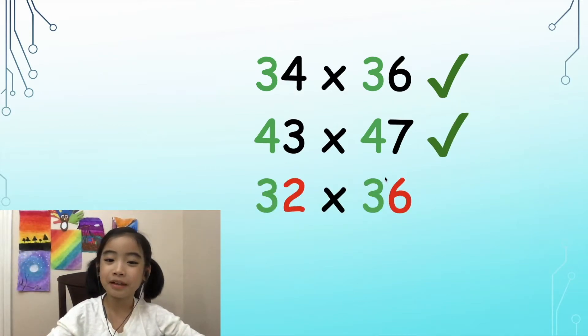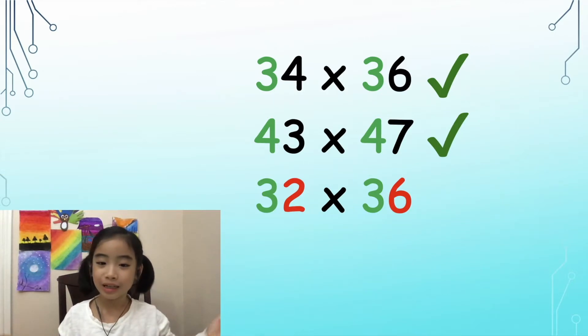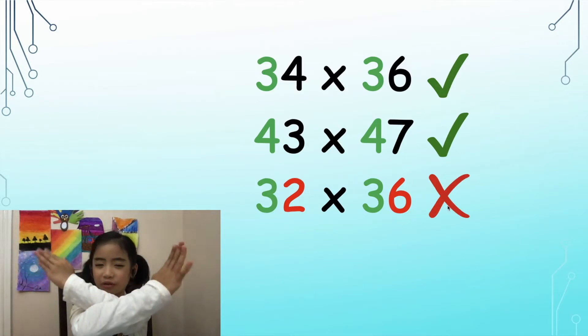Now moving on. Does the trick work for 32 times 36? Well, 2 plus 6 equals 8, not 10. From here, we know that the trick does not work for 32 times 36. No.